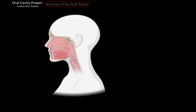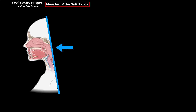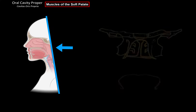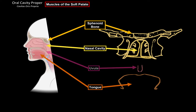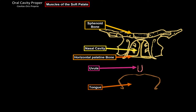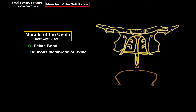The soft palate also serves as an attachment point for five different muscles. To visualize them, we make a vertical cut and look from a cross-sectional perspective, where we can see the sphenoid bone, nasal cavity with the septum, tongue, uvula, and horizontal plate of the palatine bone. The first muscle is the muscle of the uvula. It originates from the palatine bone and inserts at the mucosal membrane of the uvula. Its function is to shorten and elevate the uvula.